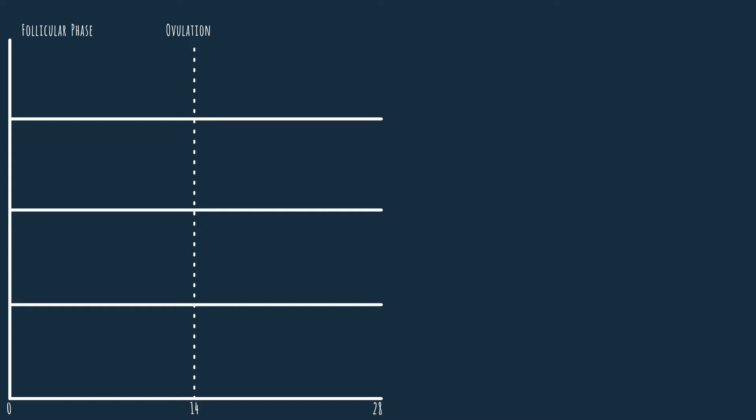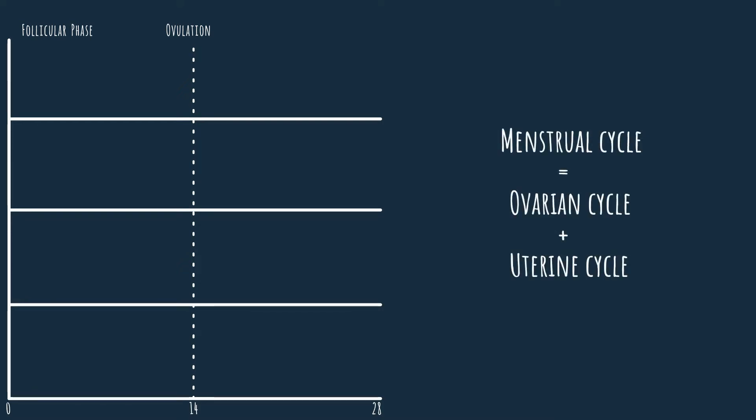Remember that the menstrual cycle is divided into the ovarian and uterine cycles. Both of these cycles are affected and regulated by hormones, which means we need to keep track of two cycles which can be quite overwhelming. To keep track of all this, we will use a graph and a diagram that will keep us company as we advance through the cycle.